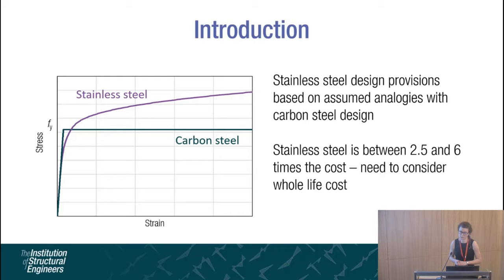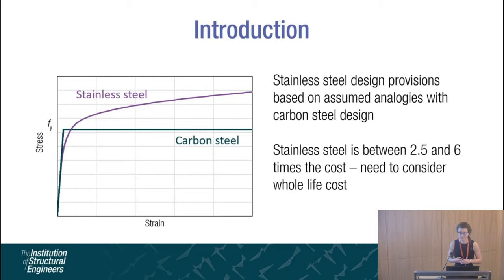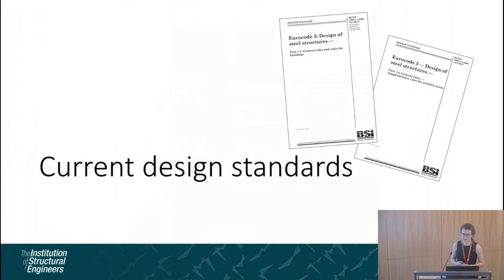Currently, although a number of design standards exist for stainless steel, their provisions have generally been developed following and in conjunction with the carbon steel design codes. Stainless steel and carbon steel have distinctly different material properties. Whilst carbon steel is accurately characterised by a linear elastic perfectly plastic material model, stainless steel exhibits a highly non-linear stress-strain response with no clear yield point and significant strain hardening. Stainless steel is between 2.5 and 6 times the cost of carbon steel; however, if we take into account whole-life costs, stainless steel becomes a more competitive option. Therefore, it is fundamental that we design effectively and that the design codes take into account the differences in material properties so that we may achieve safe, sustainable and structurally sound design.